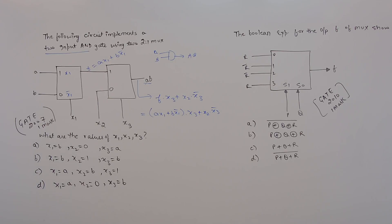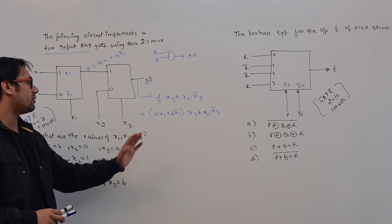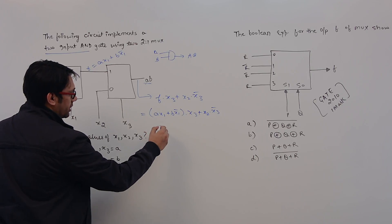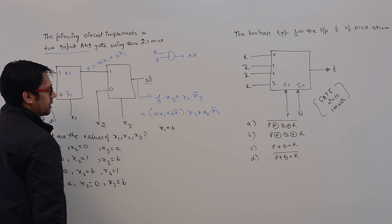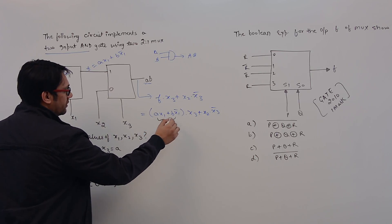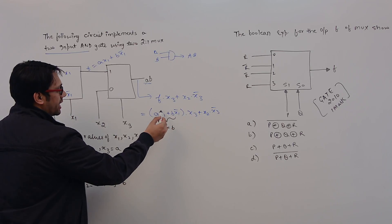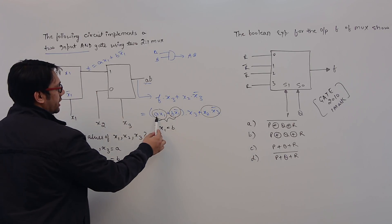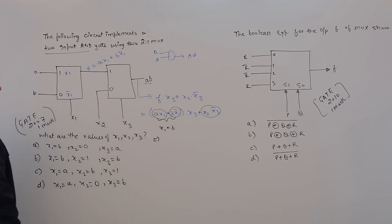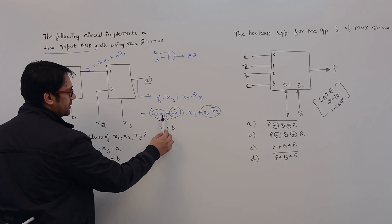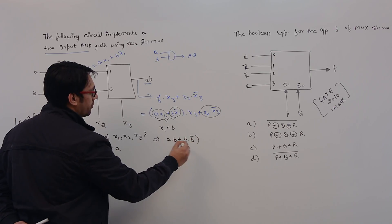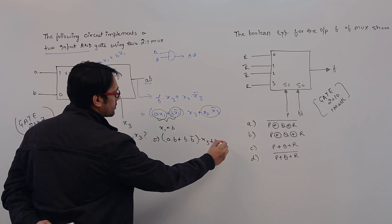We wanted to have A dot B but we cannot directly get A dot B from this complete equation. So how can we get A dot B? Let us suppose we put x1 equal to B. Then the expression becomes A·B·B + B·B'·x3 + x2·x3'. Since B·B' = 0, this simplifies to A·B·x3 + x2·x3'.